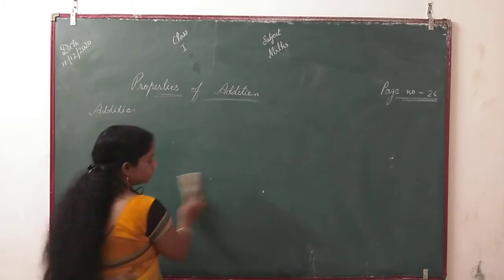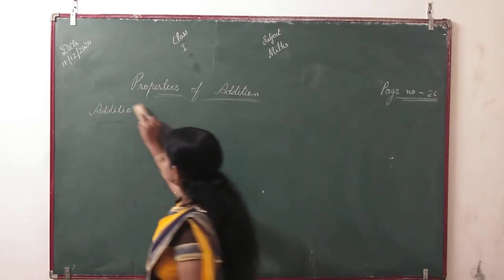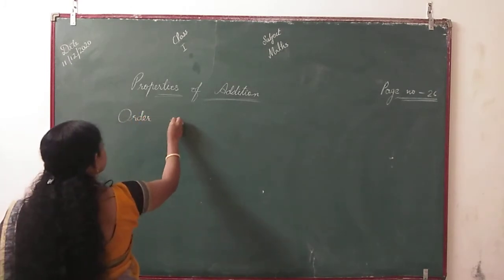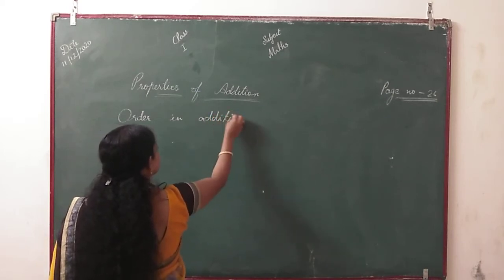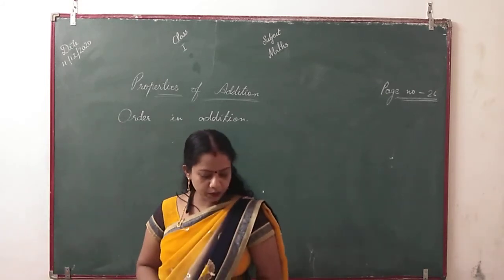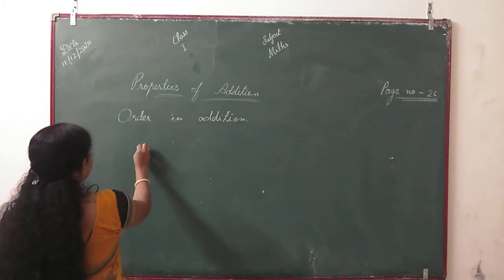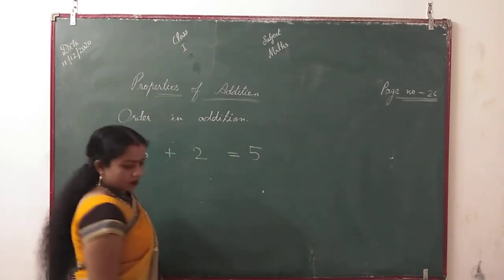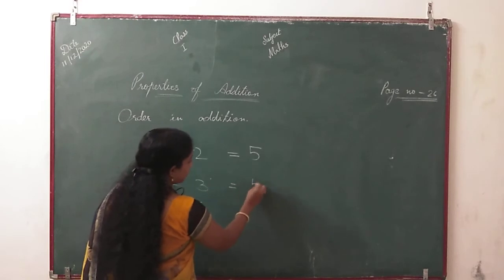Now we are going to learn the third property, which is order in addition. What is order in addition? If the order of the numbers being added is changed, the answer will be the same. For example, 3 plus 2 is equal to 5. Now if we add 2 plus 3, the answer is also 5.